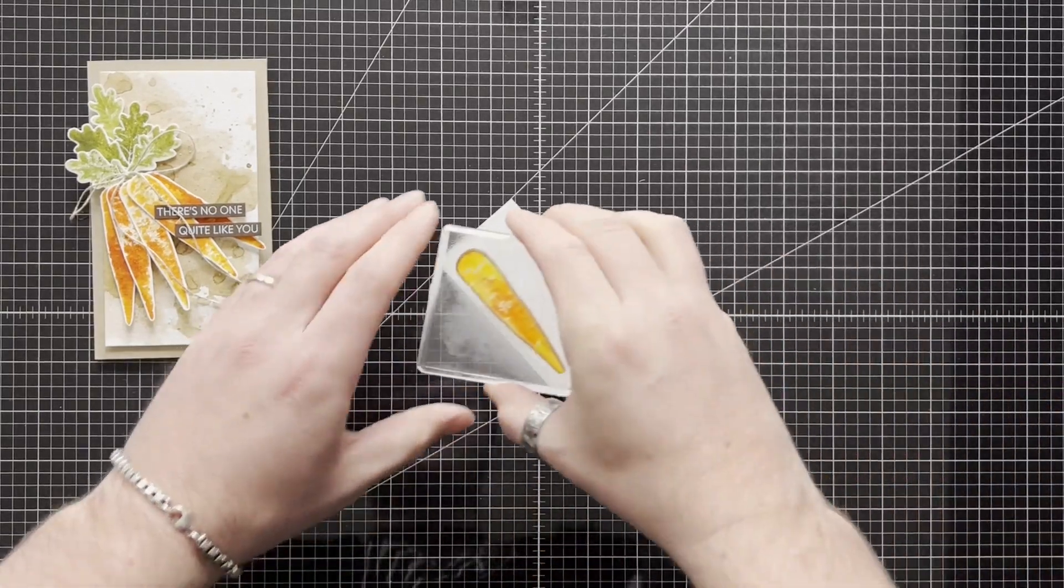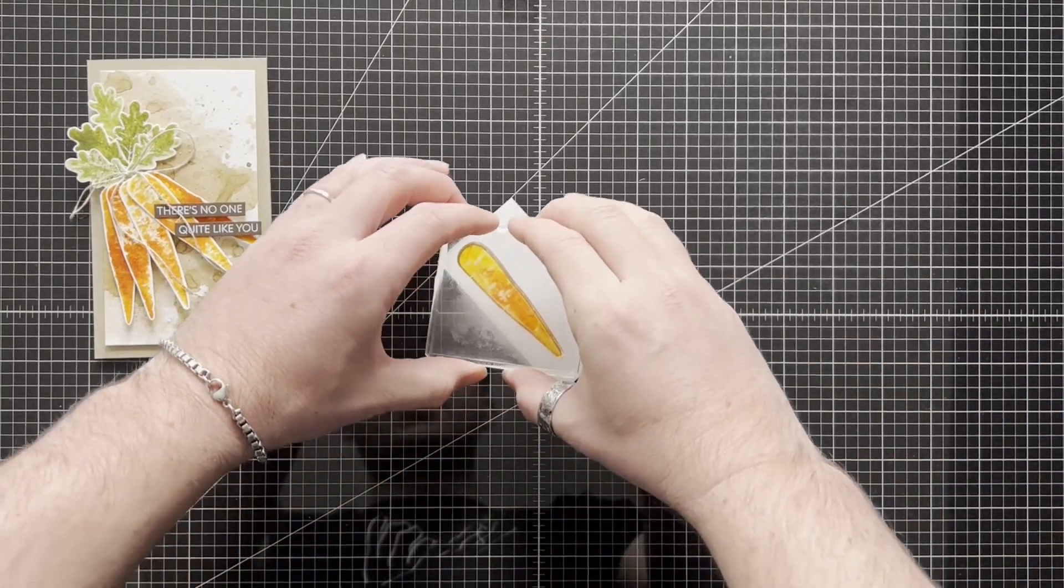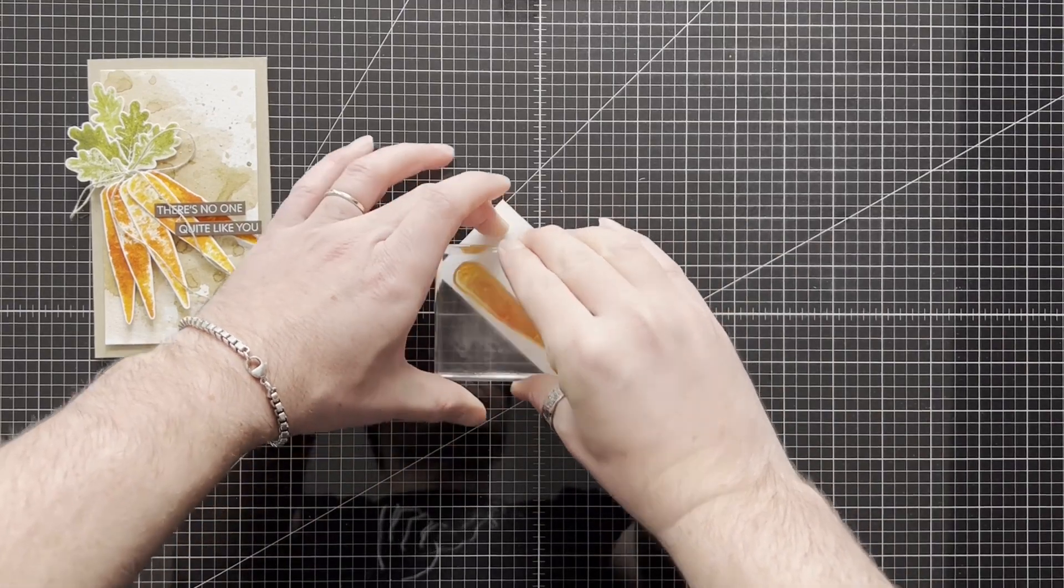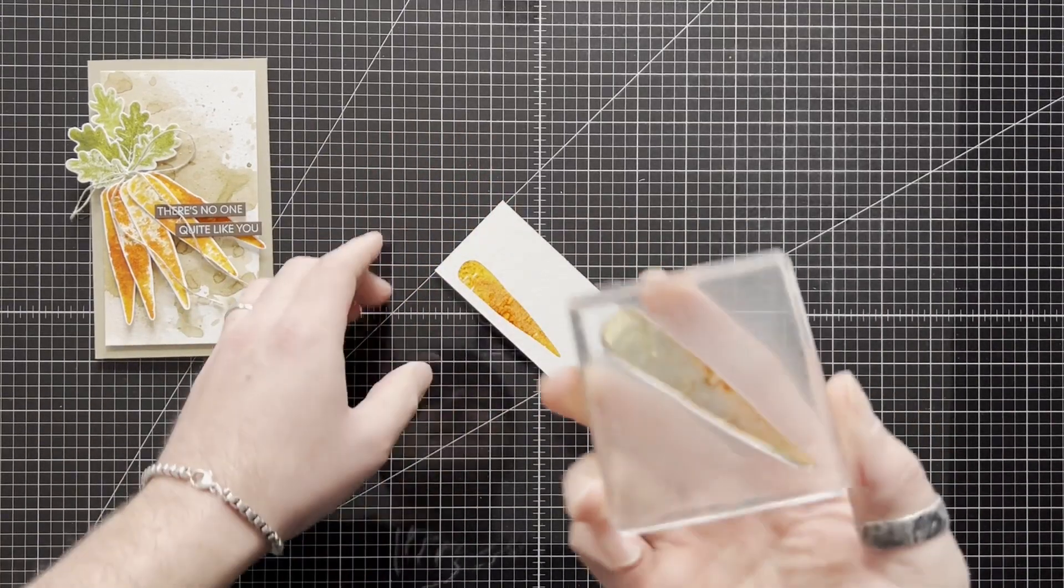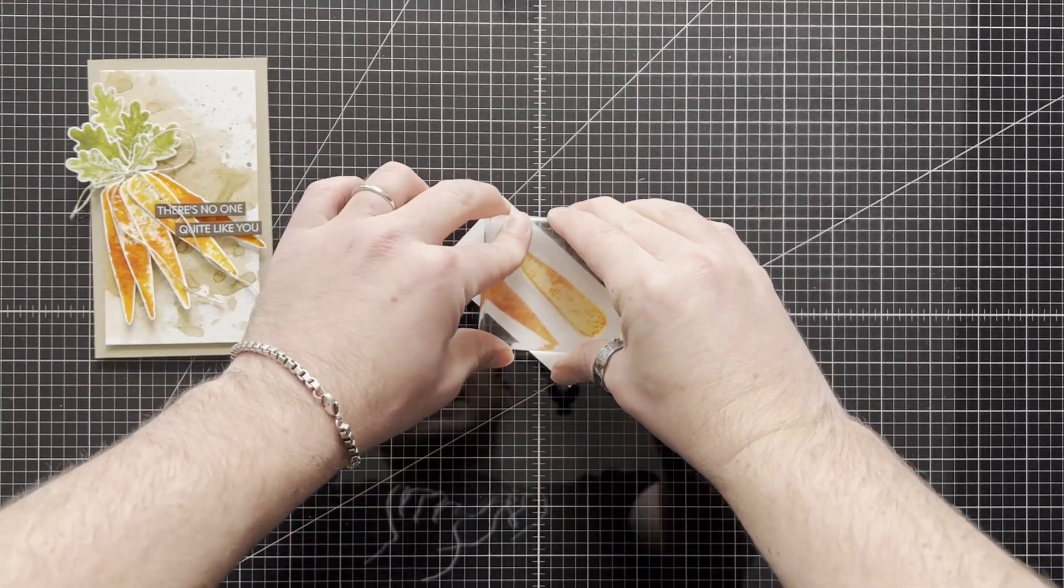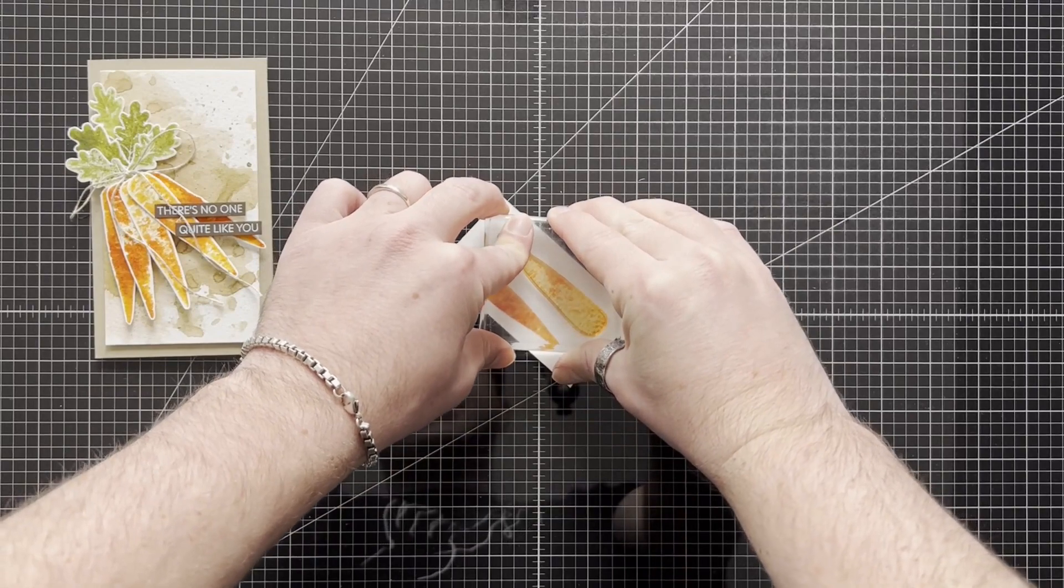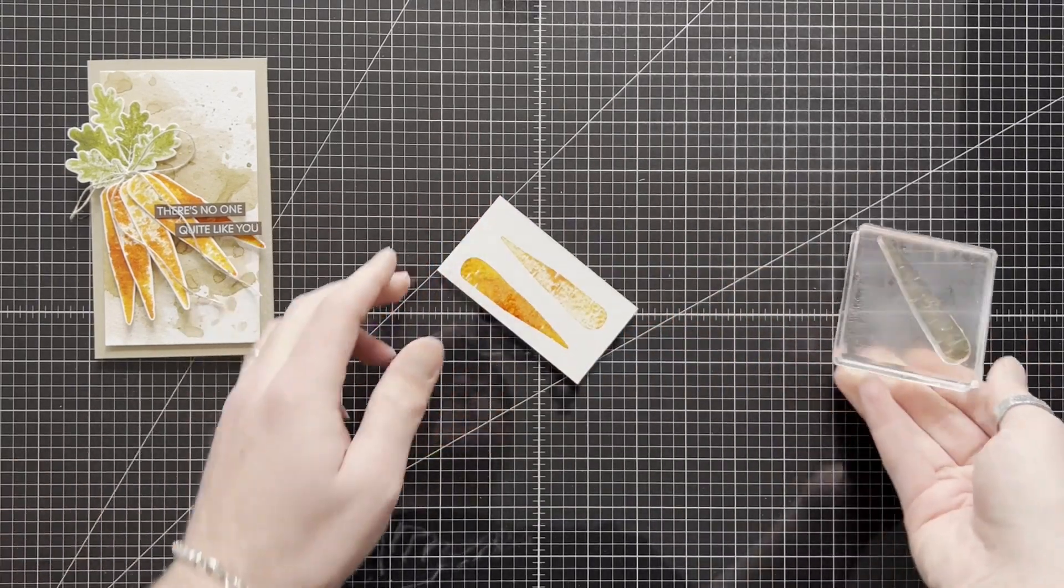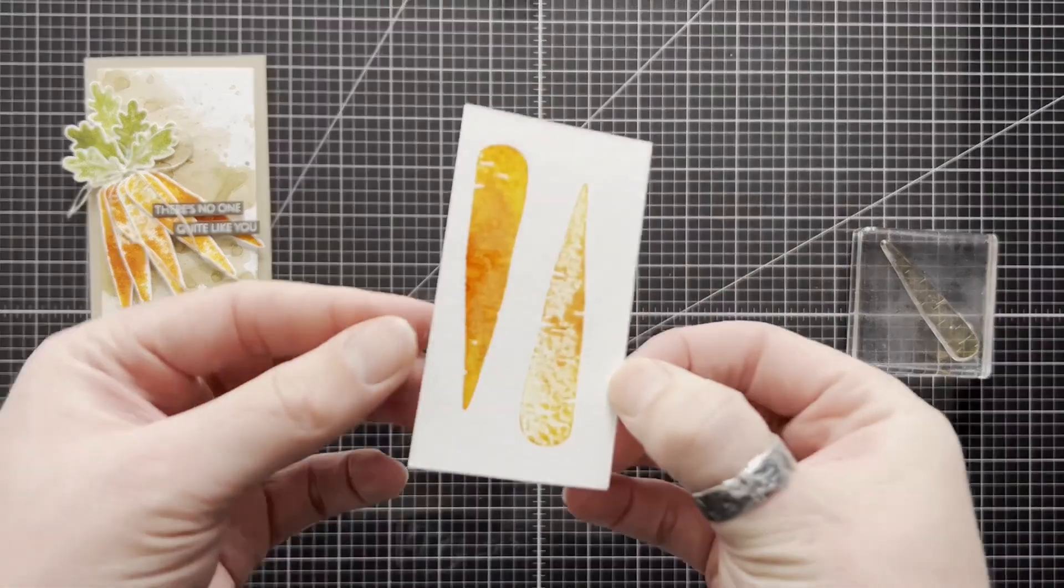So I've got a scrap piece of Fluid 100 watercolor paper. I'm going to stamp that down, leave it a few seconds and lift up. Now there's still plenty of ink and water on that stamp, so I'm going to stamp it again. And this second generation stamp I think just looks better than the full one.